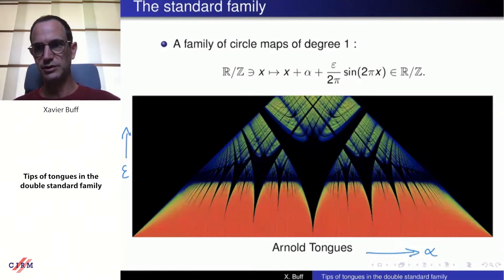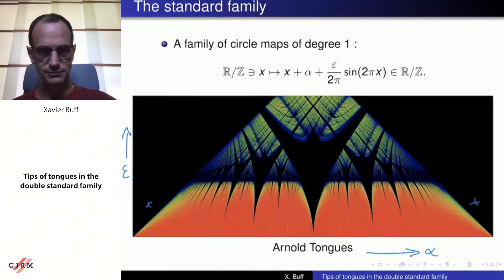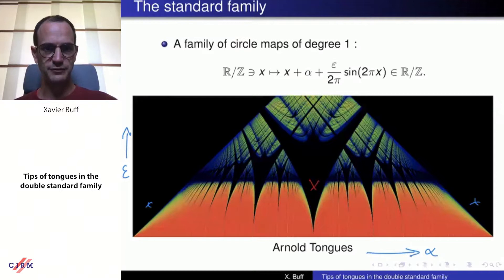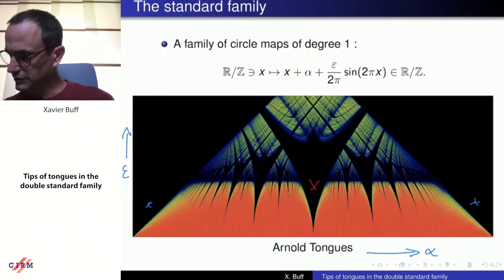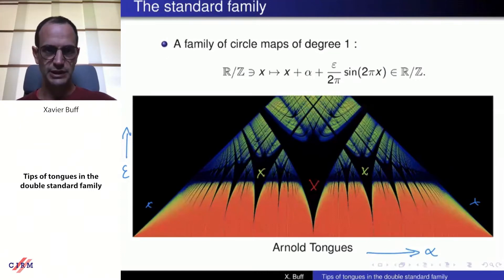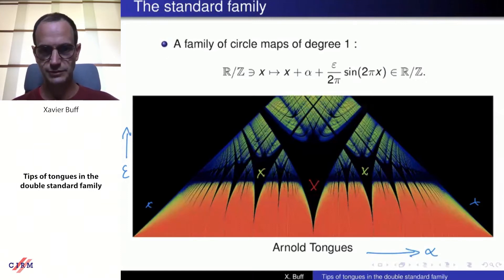As you increase epsilon you increase the non-linearity, and you can ask whether you have periodic cycles on the circle. Whenever you have a periodic cycle you color the region black. The region marked with a blue cross has a fixed point, with a red cross has a period-two cycle, and with green has a period-three cycle. You can associate a rational number to those black regions — they are called Arnold tongues, studied among other things by Vladimir Arnold. The things we will discuss are inspired by the study of Arnold tongues in this family.